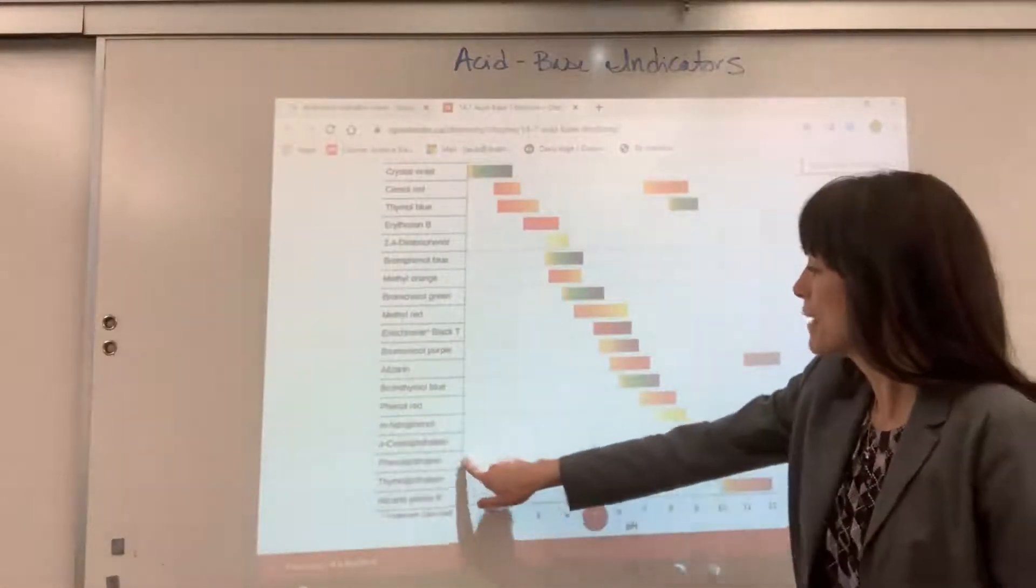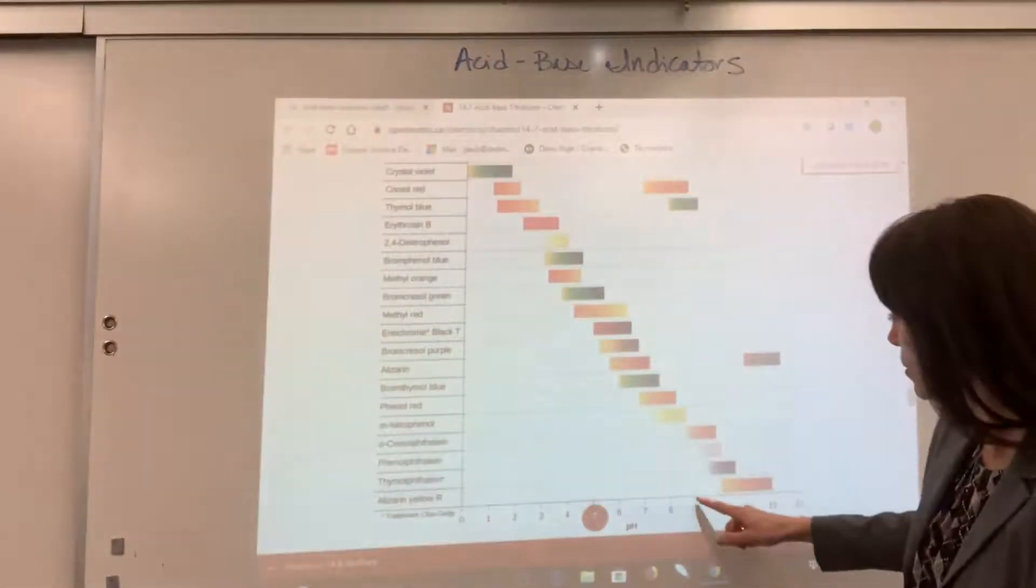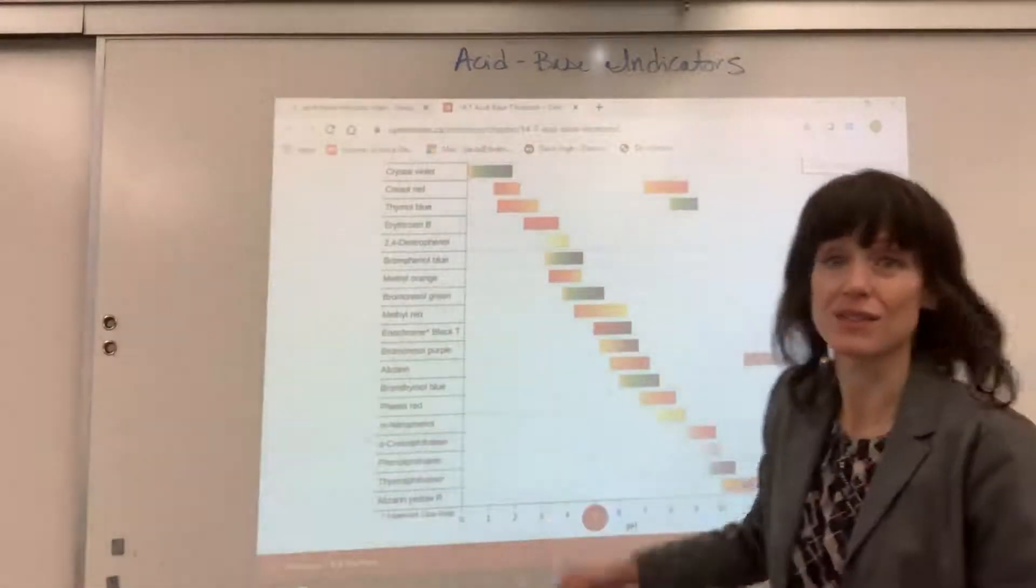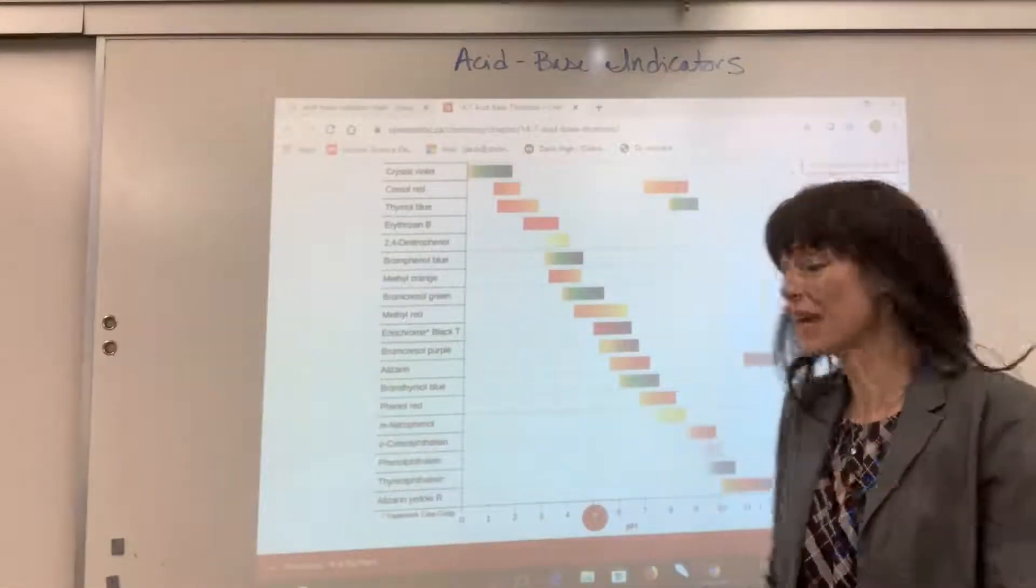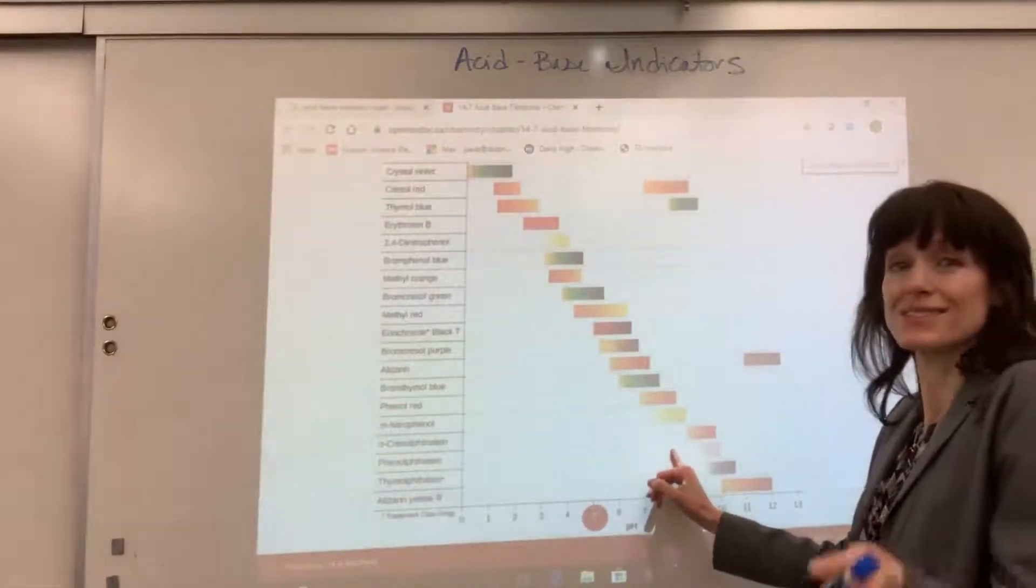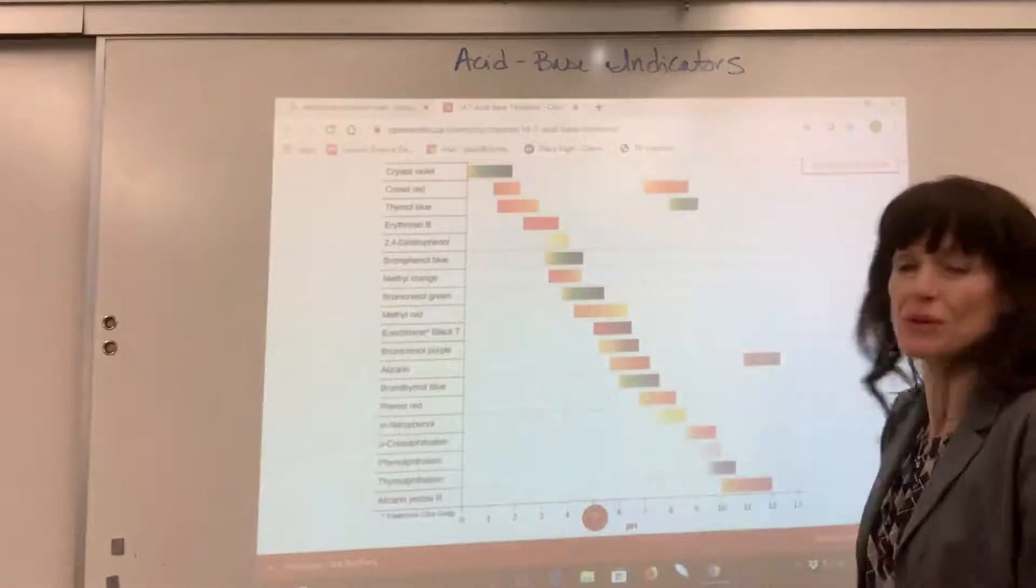So phenolphthalein, if you have a pH, notice right here, less than 8, you're going to have a clear solution. But when that pH right around that 8, when it changes to a 9, it turns to a pink color.